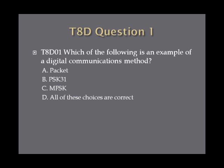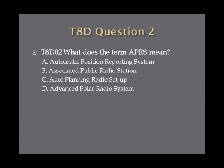Question 1: Which of the following is an example of a digital communications method? A. Packet. B. PSK31. C. MFSK. Or D. All of these choices are correct. Question 2: What does the term APRS mean? A. Automatic Position Reporting System. B. Associated Public Radio Station. C. Auto Planning Radio Setup. Or D. Advanced Polar Radio System.